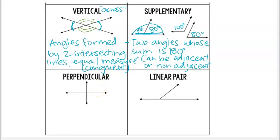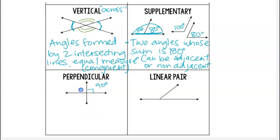We have two more angle pairs — and this is more a definition of lines. These two lines here are perpendicular, which means we actually have a 90 degree angle formed at the intersection. There are actually four 90 degree angles going all the way around these two lines.